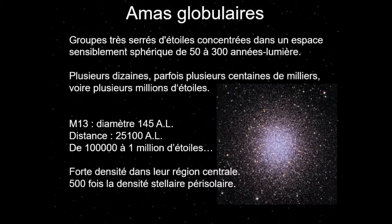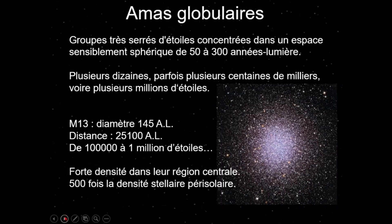On en connaît des centaines de milliers. Dedans, il peut y avoir des millions d'étoiles dans un volume très petit, donc la distance moyenne entre ces étoiles est très faible. Il y a une énorme densité dans la région centrale. Pour M13, le diamètre est d'environ 145 années-lumière, il est à 25 000 années-lumières de nous, dans le halo, et contiendrait de 100 000 à 1 million d'étoiles. La densité dans la région centrale est de 500 fois la densité stellaire autour du Soleil.